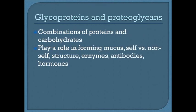Glycoproteins and proteoglycans are combinations of proteins and carbohydrates. They play a role in forming mucus, determining self and non-self — which is extremely important for white blood cells and inflammatory markers to identify foreign invaders like bacteria, viruses, or cancer cells without attacking healthy tissue. They also play roles in structure, enzymes, antibodies, and hormones, making them very diverse.